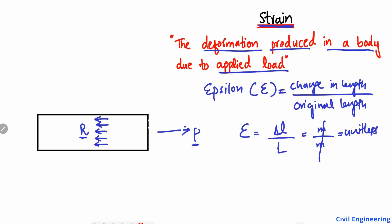This body will show some deformation. If the load is high, the body will deform more. I call this deformation delta L. This might be a very small change, for example in millimeters or micrometers, but there will be some deformation due to the applied load.